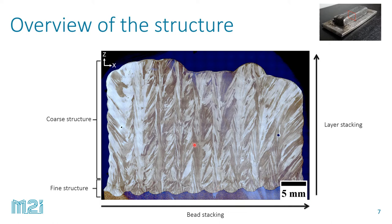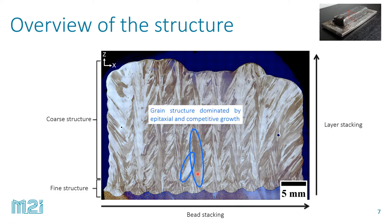Another thing we can identify by analyzing the grain shape is that we have elongated grains. These elongated grains are a result of two solidification mechanisms. One is epitaxial growth, which means a pre-existing grain can continue growing instead of nucleating a new one. How much this grain grows depends on how well aligned it is with the temperature gradient, which is known as competitive growth. The combination of these two mechanisms forms the entire microstructure of the part.